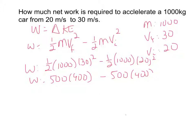So W equals 450,000 minus 200,000, giving a net work of 250,000 joules.